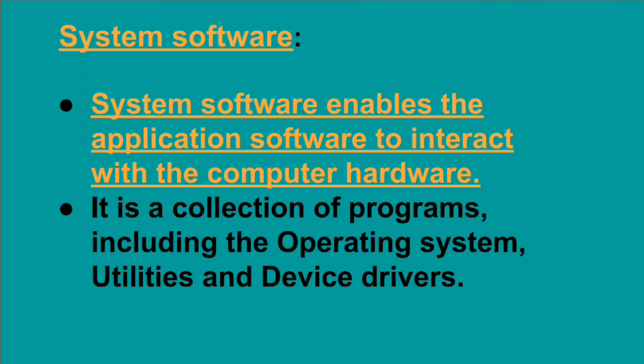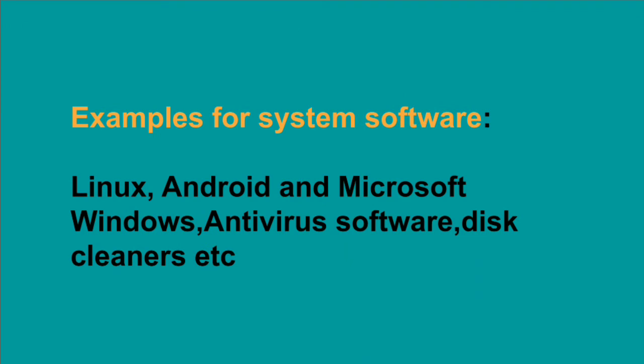The operating system has full control, so the operating system, utilities, and device drivers are the three types of system software. Examples of system software include Linux, Android, Microsoft Windows, antivirus software, disk cleaners, and so on.